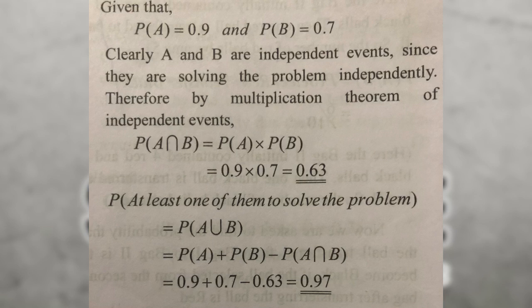Using the addition theorem: P of A union B equals P of A plus P of B minus P of A intersection B. Since A and B are independent, P of A intersection B equals P of A multiplied by P of B.